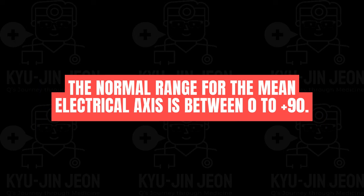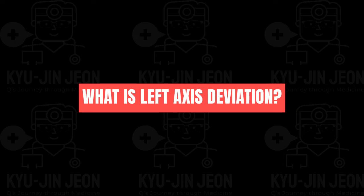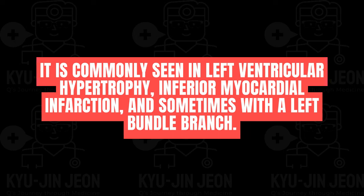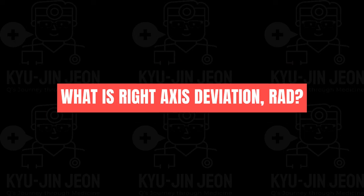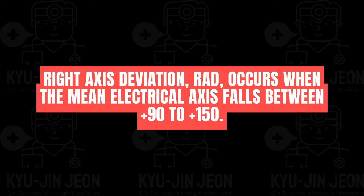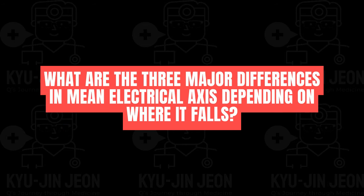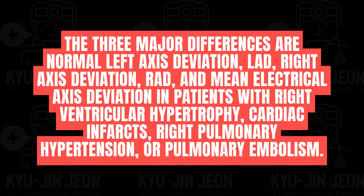The normal range for the mean electrical axis is 0 to +90 degrees. Left axis deviation (LAD) occurs when the mean electrical axis falls between 0 and -90 degrees, commonly seen in left ventricular hypertrophy, inferior myocardial infarction, and sometimes left bundle branch block. Right axis deviation (RAD) occurs when the mean electrical axis falls between +90 and +150 degrees, found normally in some children, athletes, tall thin adults, and in patients with right ventricular hypertrophy or certain infarct situations.